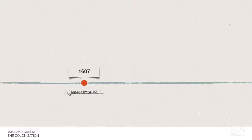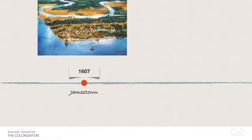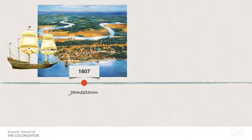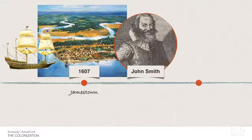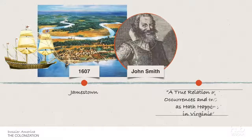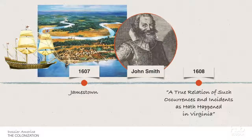In 1607, the Virginia Company of London established Jamestown, the first English colony in America. The expedition was led by John Smith. His book, A True Relation of Such Occurrences and Incidents as Hath Happened in Virginia from 1608, was the first book written on American soil about America. A common feature of the literature of this period, which can also be found in this book, is the practical nature of the texts.